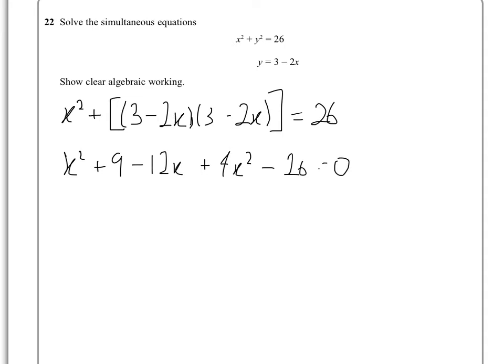Now if we group the terms together, the x squared and the 4x squared will give us 5x squared, the 12 is on its own, and then the 9 minus 26 will give us minus 17, that's equal to 0. Now we need to factorise that,